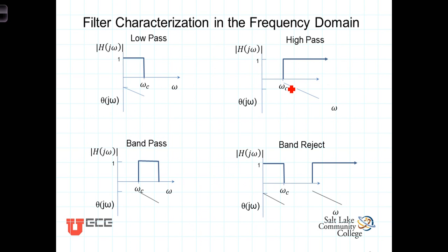These filters are also characterized in the frequency domain. We're going to talk about four different types of filters. A low-pass filter is a filter that's designed to allow only lower frequencies through. We refer to this area here as the pass band.